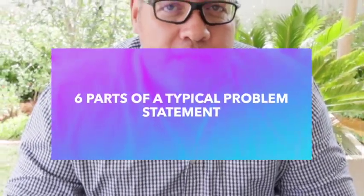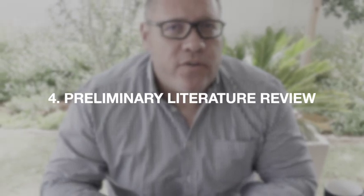A typical research proposal has six sections: the introduction and background, the problem statement, the objectives or research questions, the preliminary literature review, the methods section, and finally the conclusion.